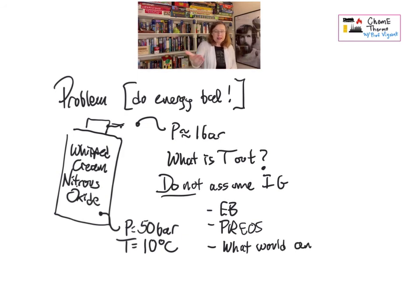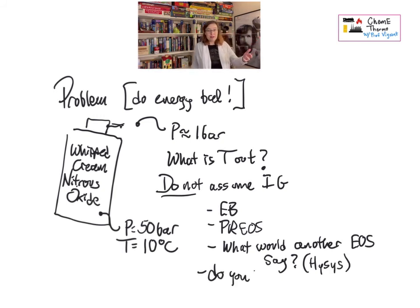So I want you to write this energy balance. It's an energy balance you know because it's for a valve. Then I want you to solve that energy balance imagining it was an ideal gas. That should be reasonably quick. Then I want you to use the Peng-Robinson equation of state and see through the calculator. And I want you to see what temperature you get when you apply that equation of state.